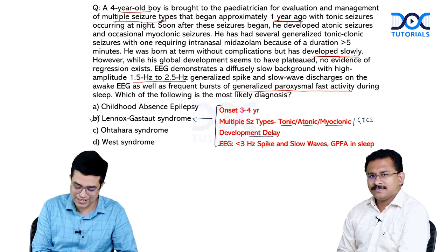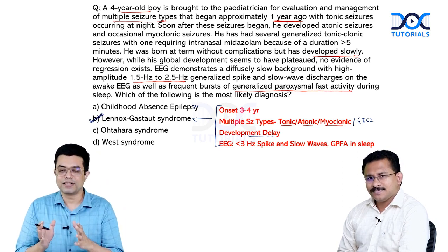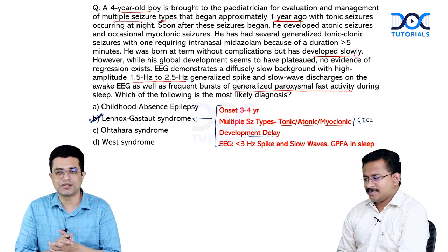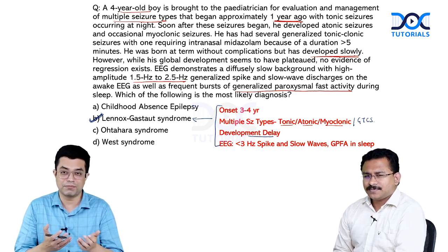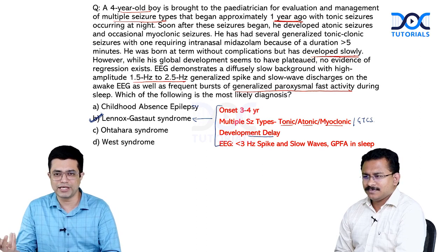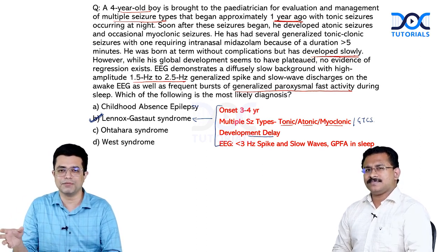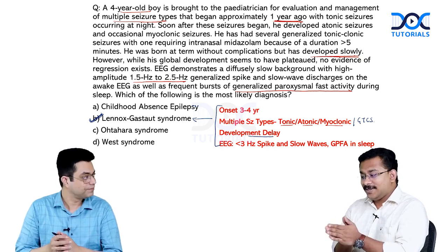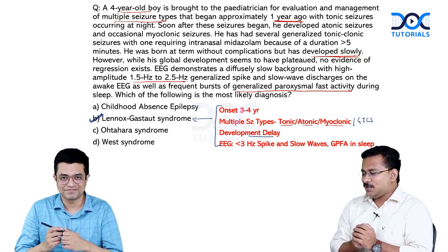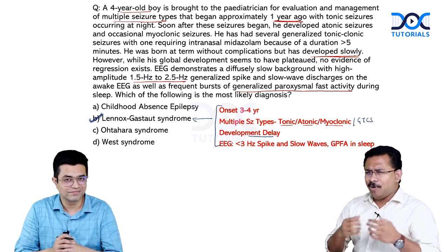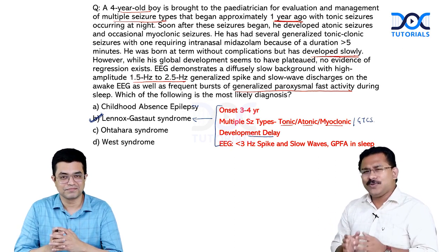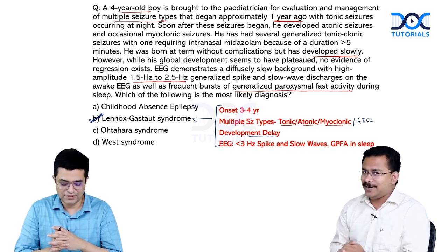The answer is B, Lennox-Gastaut syndrome. Looking at option A, childhood absence epilepsy usually begins around two to three years of age and can manifest up to 10 years. Beyond 10 years we call it juvenile absence epilepsy. Childhood absence epilepsy does not present with polymorphic drug-resistant seizures like the multiple seizure types in this individual, and the EEG finding is 3 hertz spike and wave — not fitting here — so you can easily rule it out.